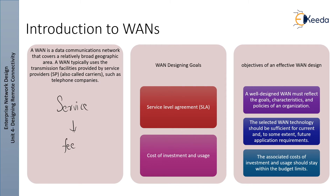Introduction to Wide Area Networks: A WAN is a data communication network that covers a relatively broad geographic area. A WAN typically uses the transmission facilities provided by service providers, also called carriers, such as telephone companies. Switches or concentrators connect the WAN links, relay information through the WAN, and enable the services it provides. A network provider often charges users a fee called a tariff for the service, so WAN communication is often known as a service.